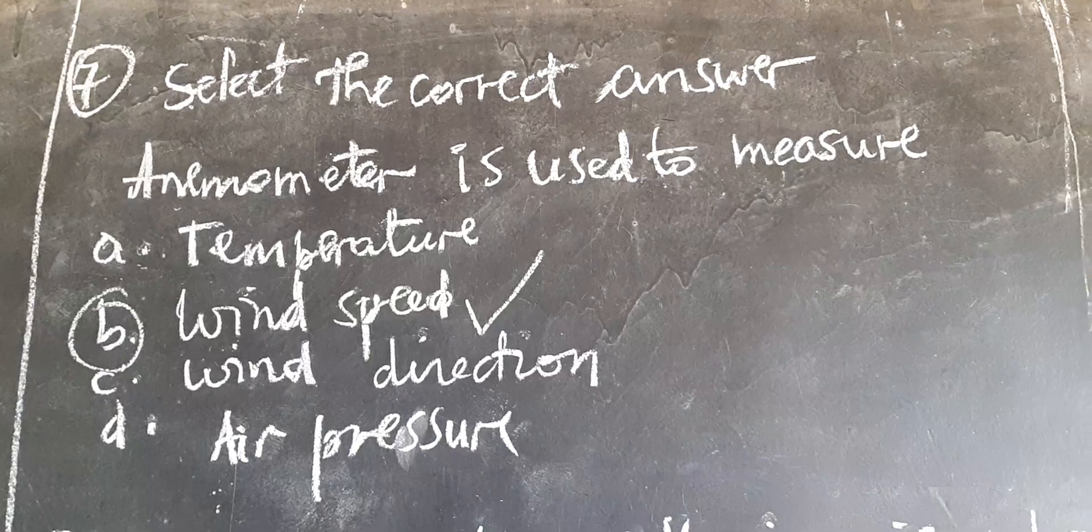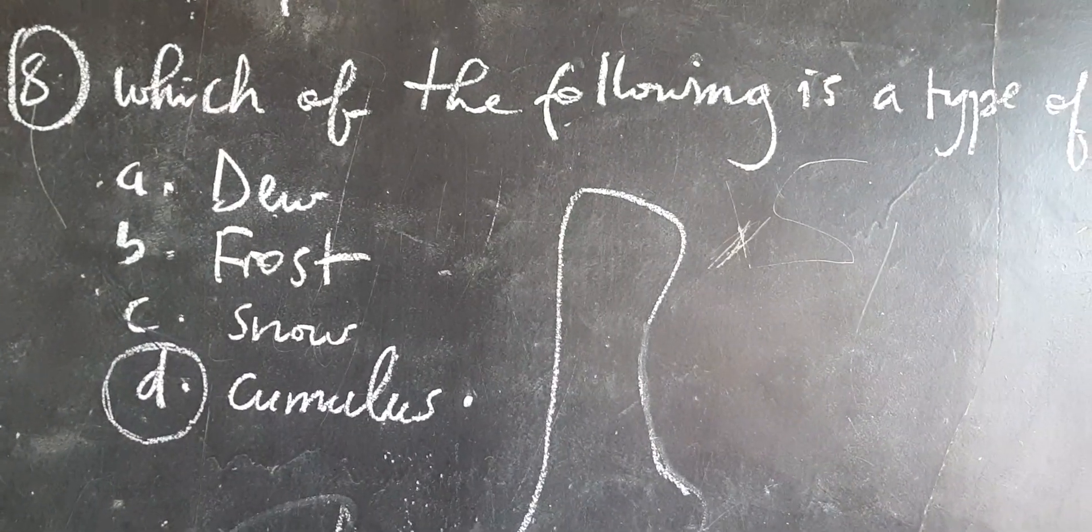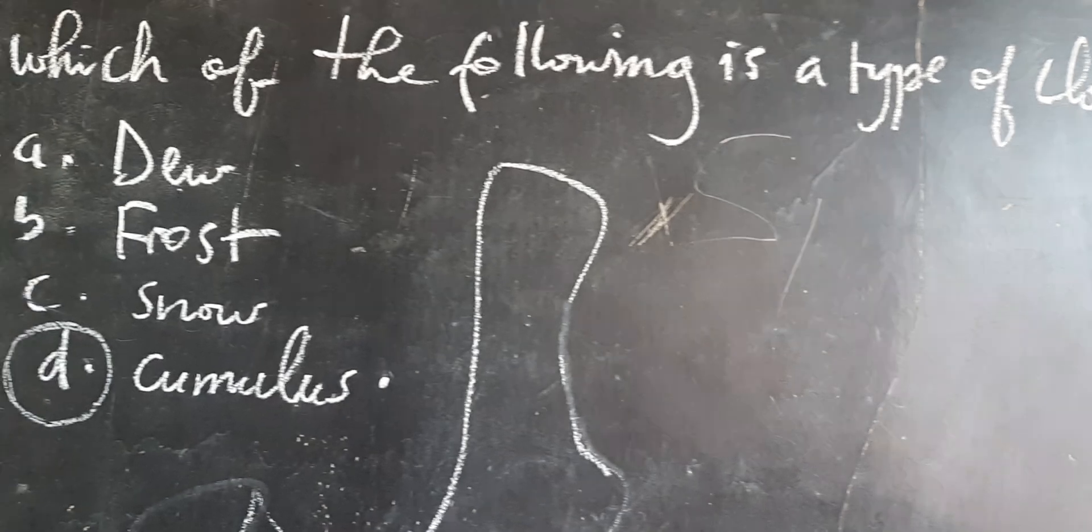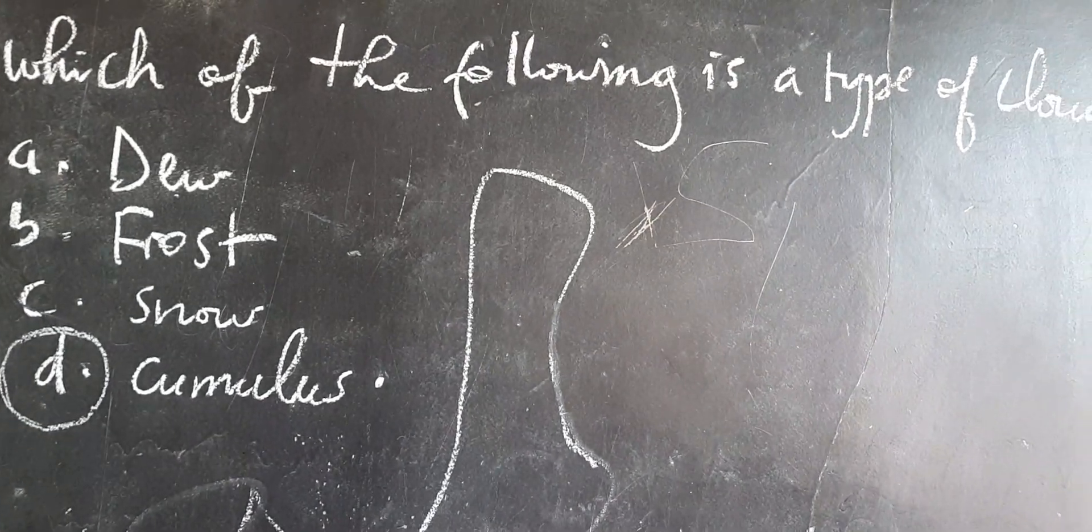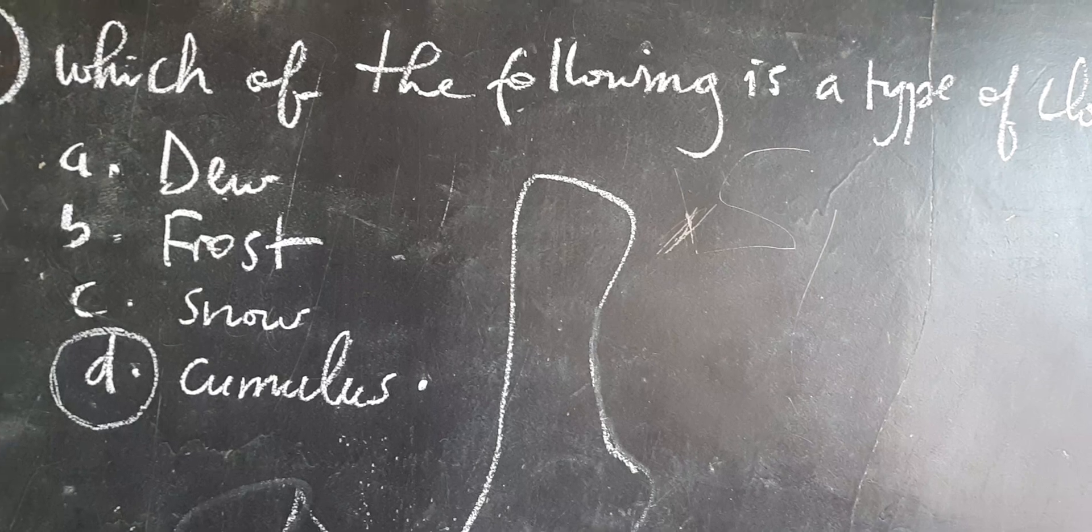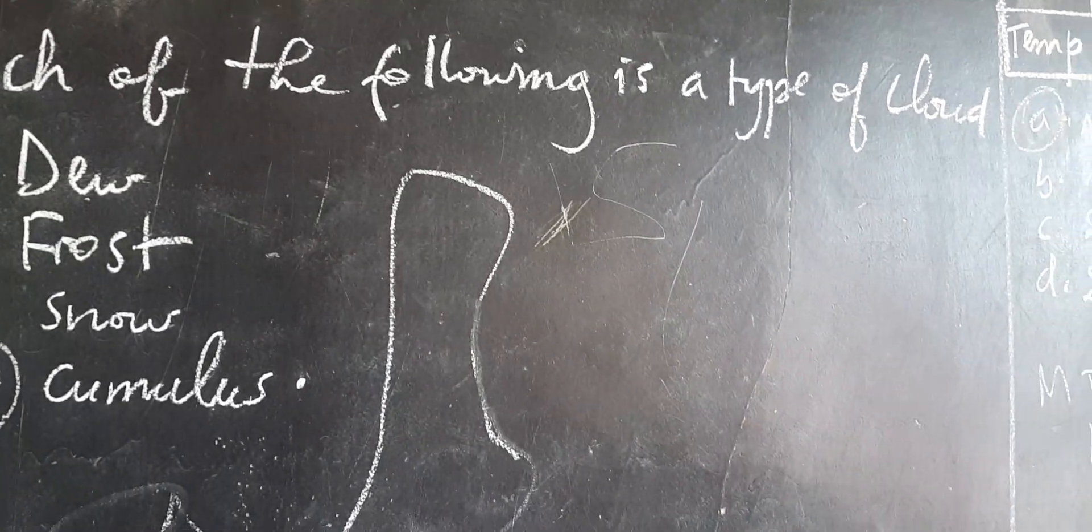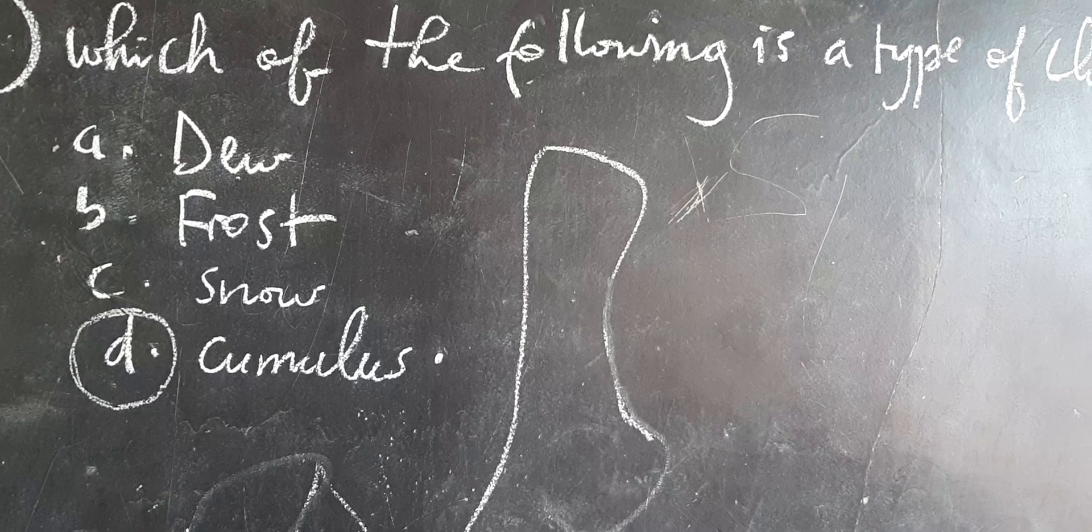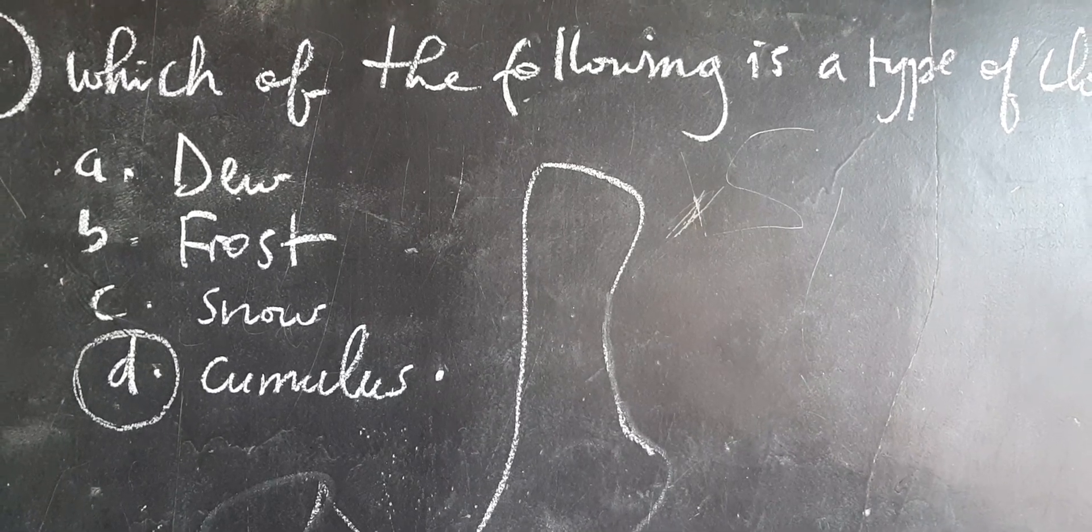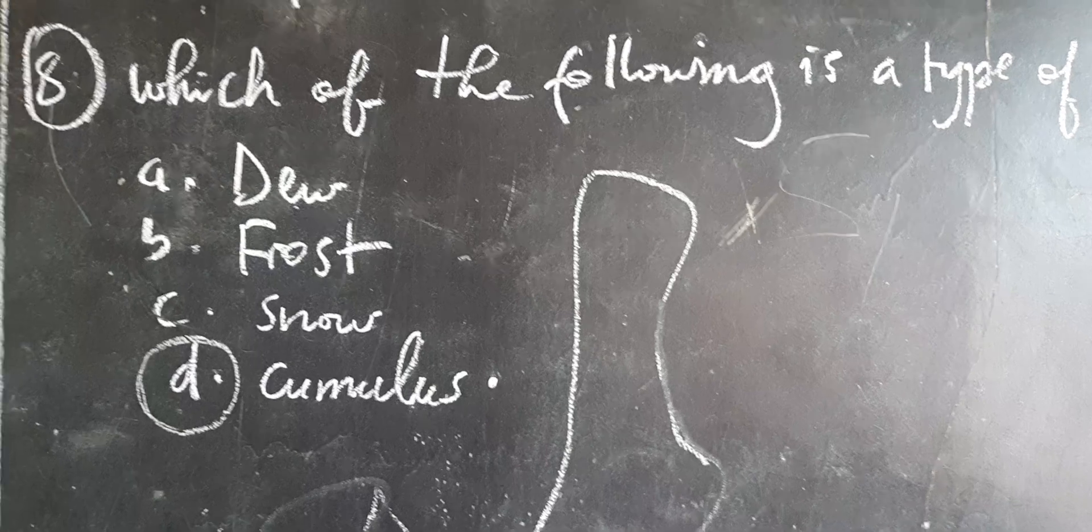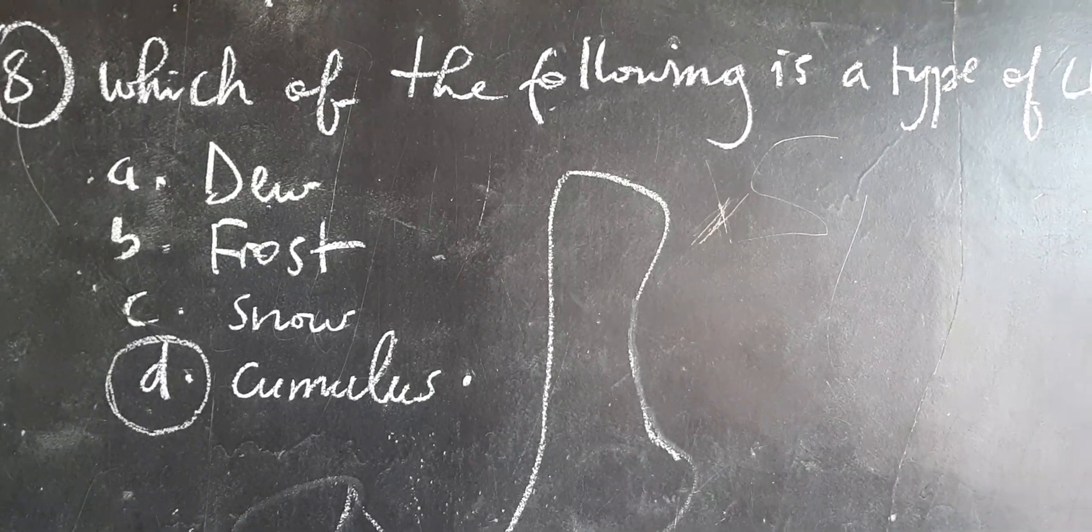Let's go to question number eight. Which of the following is a type of cloud? Which of the following? They give us different terms, but they want us to choose one type of cloud they have given. A. Dew, B. Frost, C. Snow, D. Cumulus.